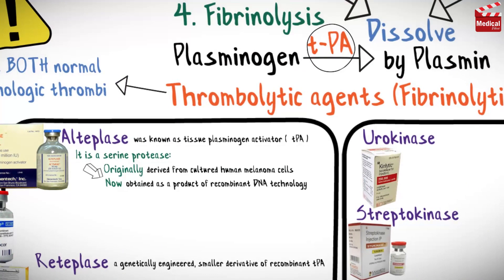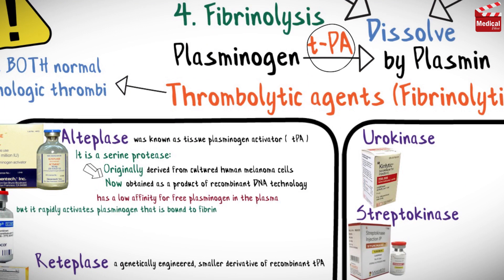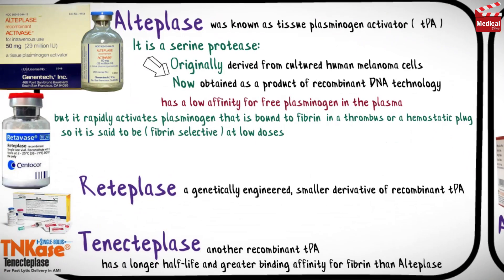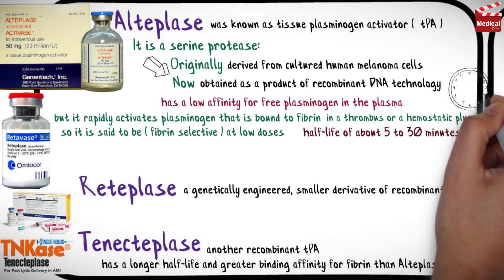Alteplase has a low affinity for free plasminogen in the plasma, but it rapidly activates plasminogen that is bound to fibrin in a thrombus or a hemostatic plug. For this reason, alteplase is said to be fibrin selective at low doses. It has a very short half-life of about 5 to 30 minutes.